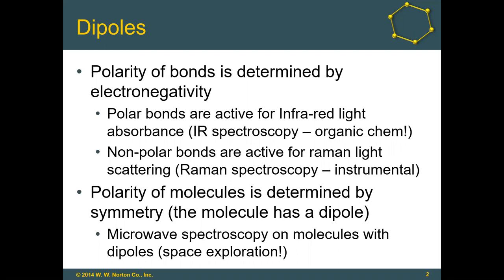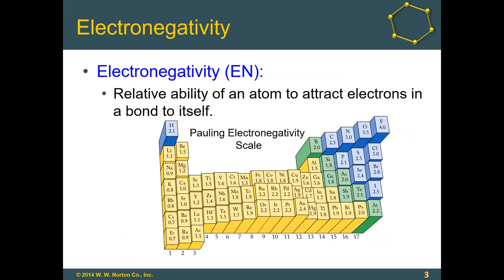So if polarity is determined by electronegativity, it helps to know what electronegativity is. You may recall from our earlier discussion of periodic trends that electronegativity is highest for fluorine. On the Pauling electronegativity scale, fluorine has a value of 4.0 — the highest electronegativity on the whole periodic table.